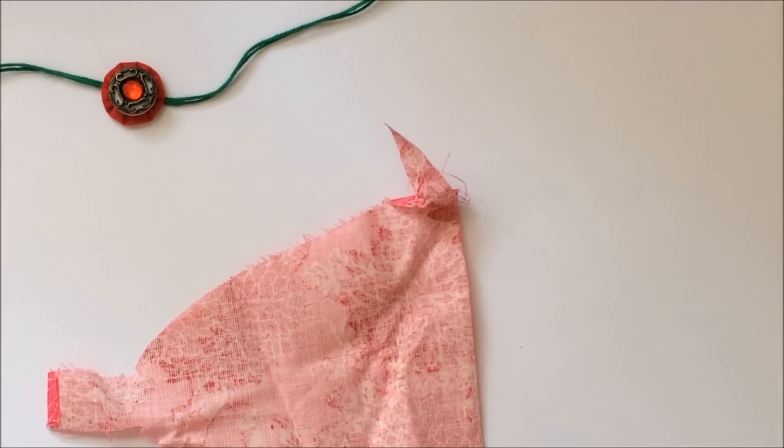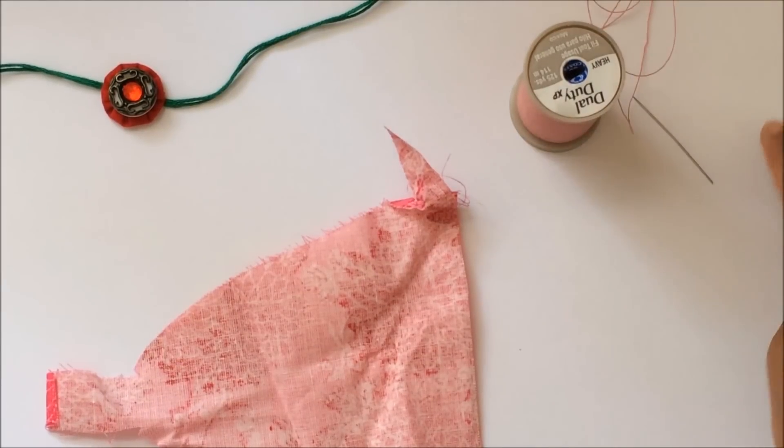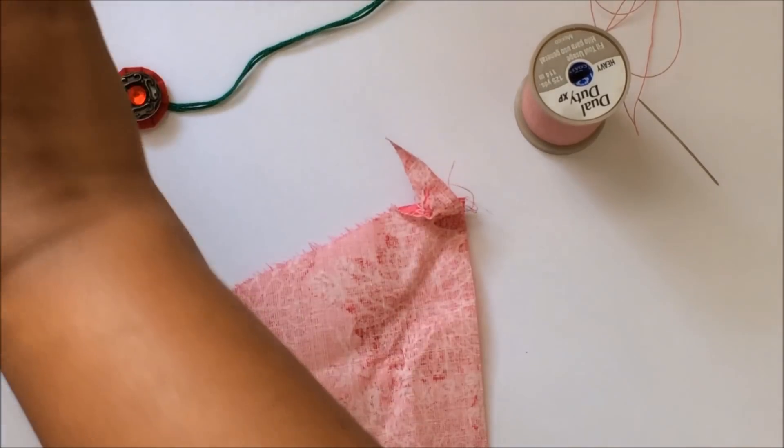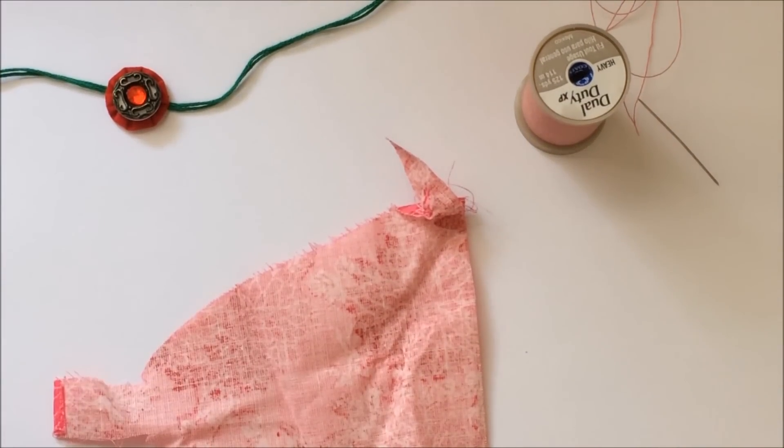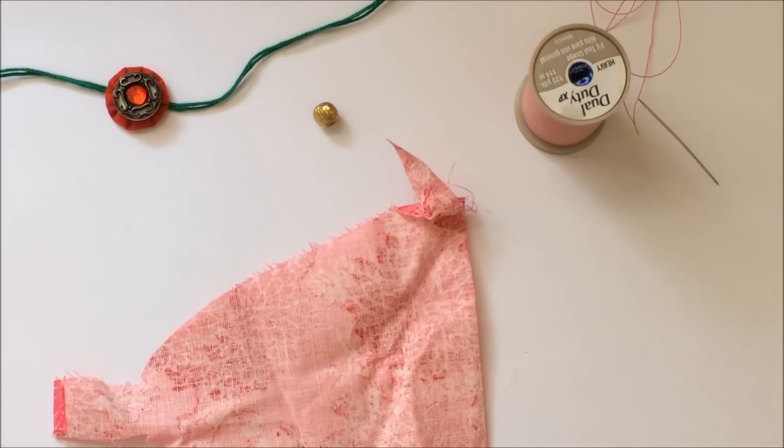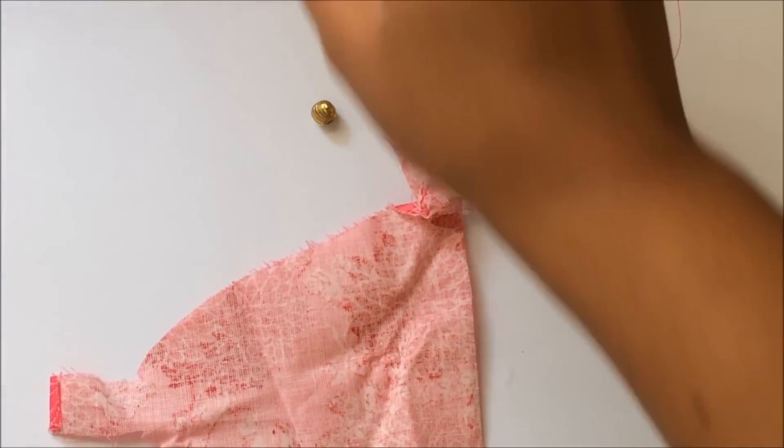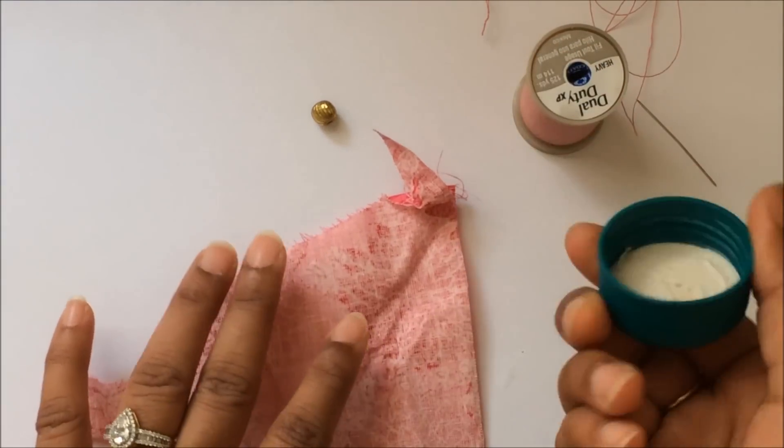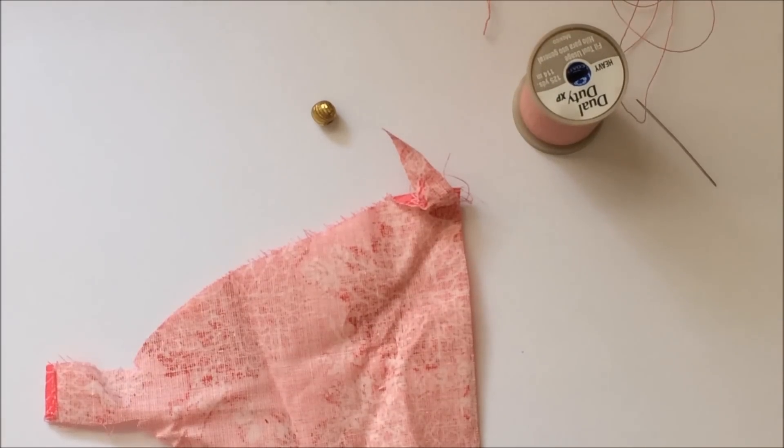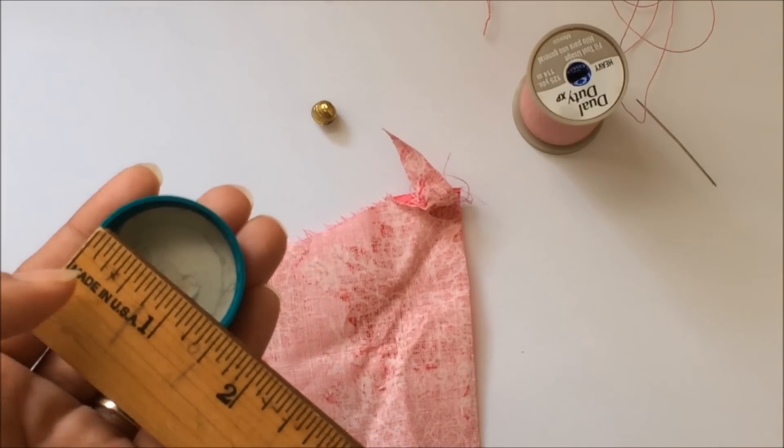You're gonna need some matching thread, some needles, and some kind of centerpiece. I've used a button here, or you can use some beautiful beads at the center. We're gonna make this base for it. For that you need some sort of circle - this is a bottle cap I had in my stash, or you can use a stencil. It's like one and a half inch of a circle.